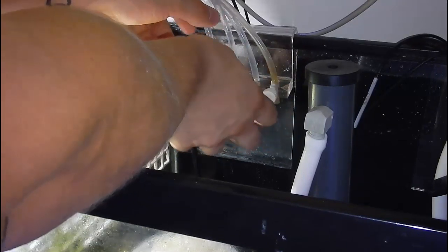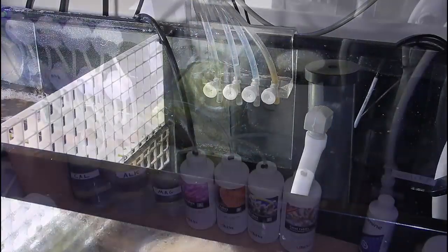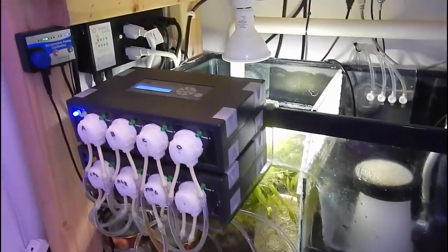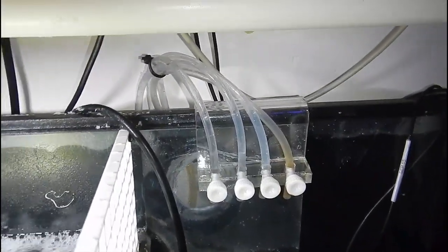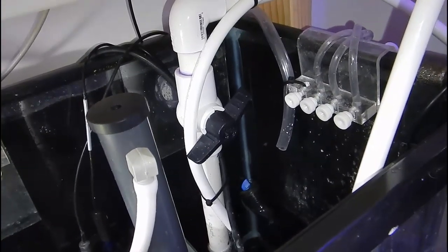Let me give you a closer look. All right, so we have the color program down here going up to the doser and then over to the dosing tube holder, and we have the calcium, alkalinity, magnesium with the auto top-off there.